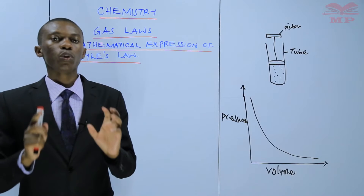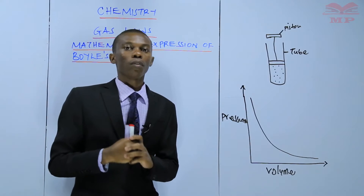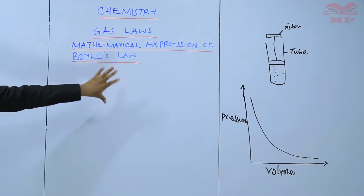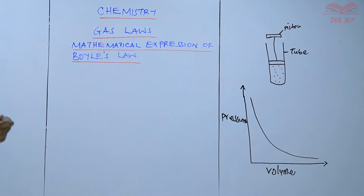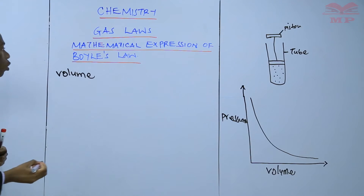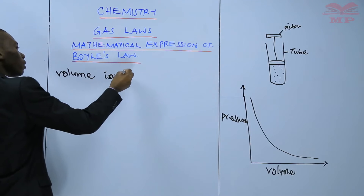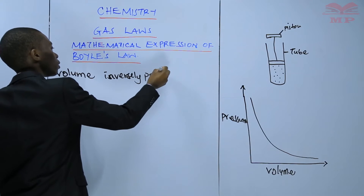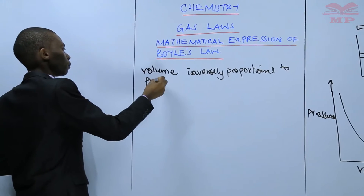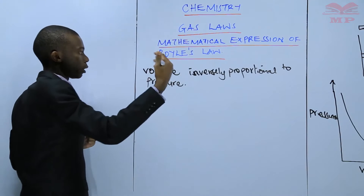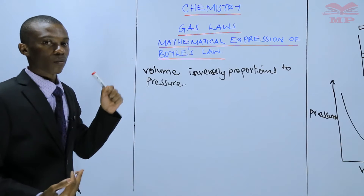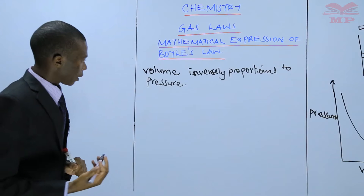In this lesson, I want to show you the mathematical expression of Boyle's Law. In Boyle's Law, we said that volume is inversely proportional to pressure. So when volume increases, pressure decreases, and when pressure increases, volume decreases.